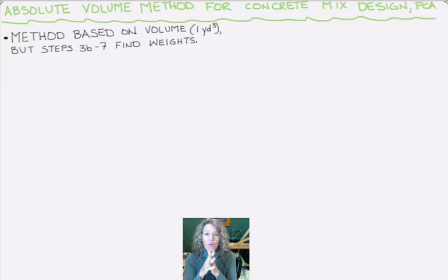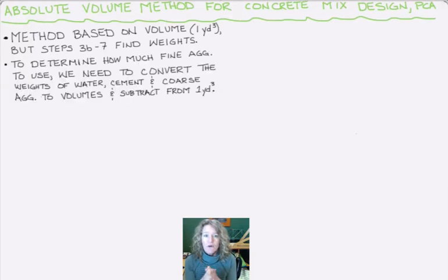We need to figure out a way so that when it's time to determine how many fine aggregates we need in step nine, we're trying to still make one cubic yard. We have to figure out how much volume we have of cement and water and subtract that from one cubic yard to know the volume we need of fines.